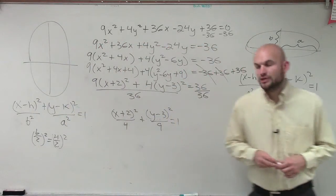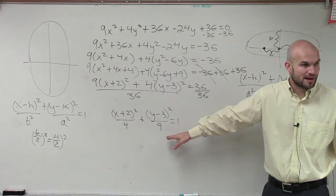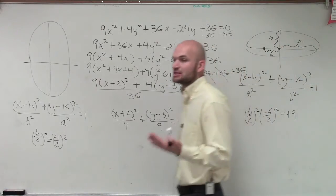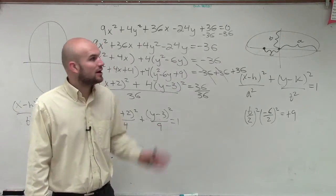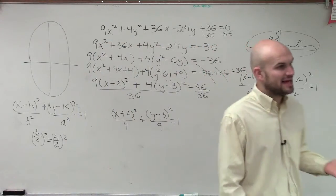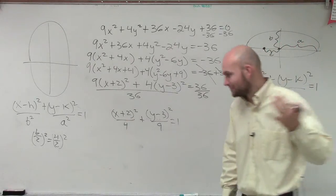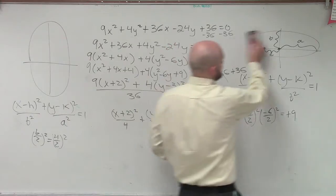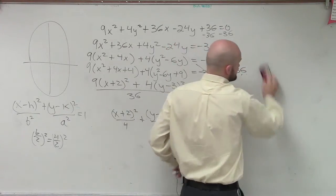Now we've written it in this format, and we can notice that the larger of the square terms, my a, is going to be 9. Since the larger of my square terms is under the y variable, am I now going to have a horizontal or a vertical ellipse? Vertical. So let's erase this horizontal one, because we are not really concerned about it.